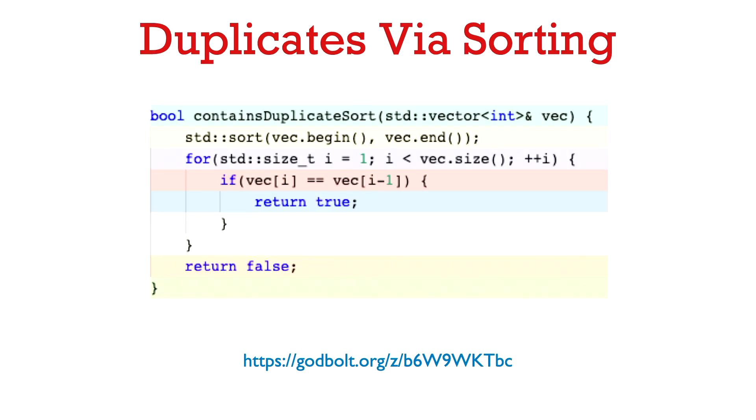So here's that code in C++. We sort the vector in the first line, and then we iterate through the array, checking if the ith element is the same as the i minus first element. If ever they're the same, then we found a duplicate, and we can return true. Otherwise, if the for loop completes, then we return false. And you can find this code up on Godbolt.